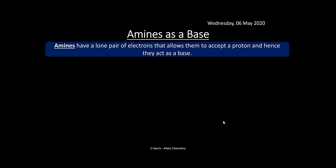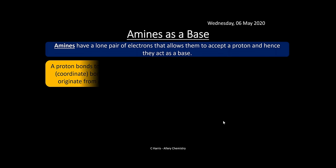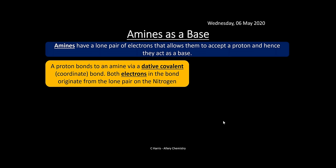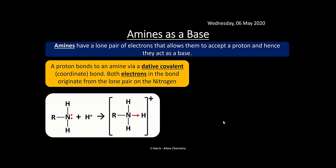Amines act as a base. Amines have a lone pair of electrons on the nitrogen that allows them to accept a proton and act as a base. The proton bonds to the amine via a dative covalent bond, also called a coordinate bond, where both electrons come from that lone pair on the nitrogen — similar to the quaternary ammonium salt we looked at. Here, a primary amine reacts with an acid represented by H+ ions to form an ammonium ion with an overall positive charge.